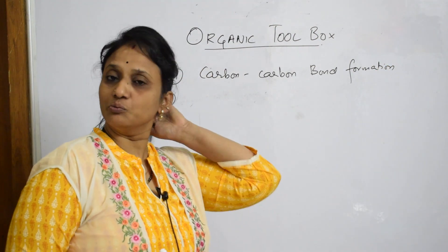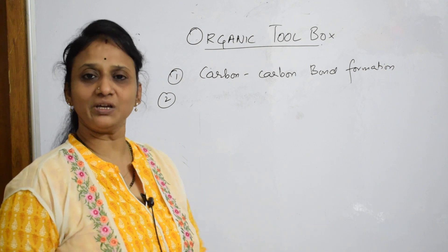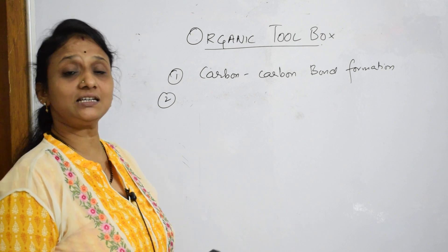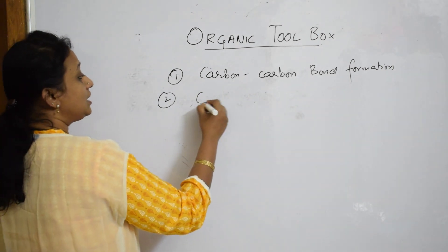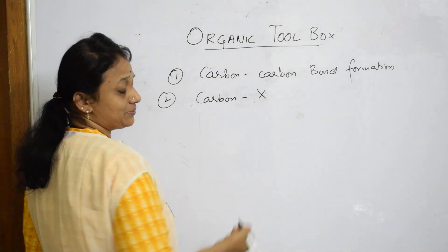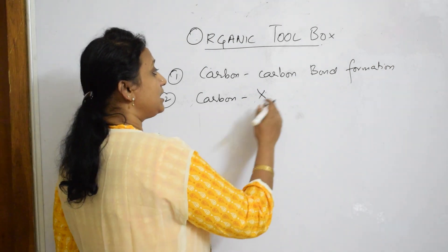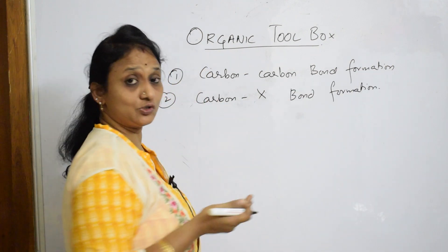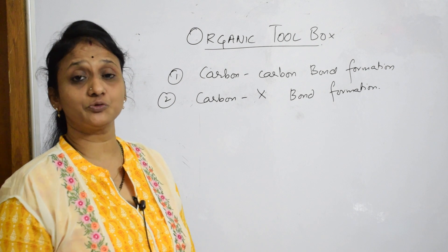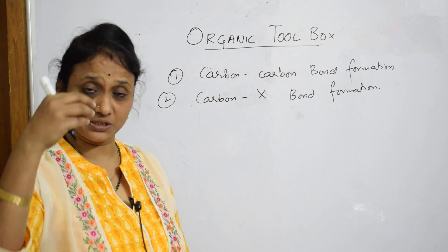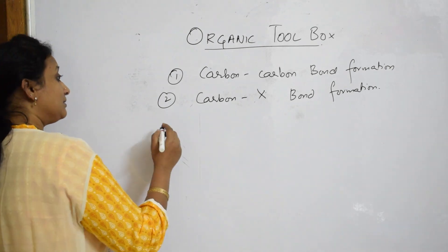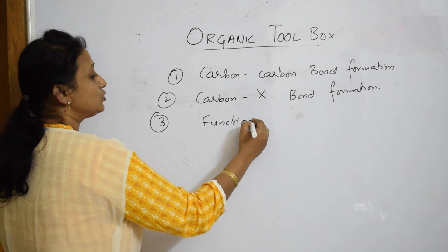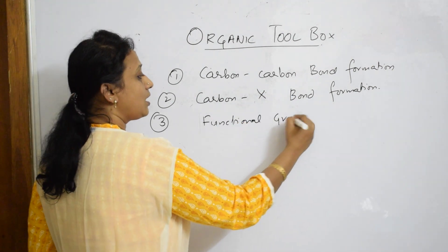Just like the hammer is the most important tool, carbon-carbon bond formation is the first category. The second category is carbon-halogen (carbon-X) bond formation — whichever reaction involves introducing a halogen or certain other groups. The third category is functional group interconversion reactions.